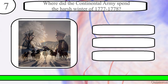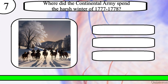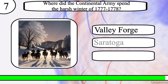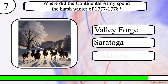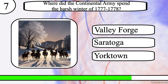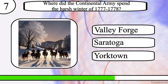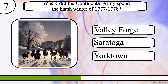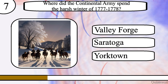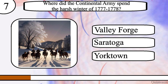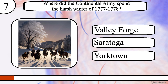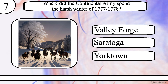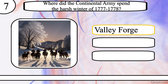Question 7. Where did the Continental Army spend the harsh winter of 1777-1778? Valley Forge, Saratoga, or Yorktown? The correct answer is Valley Forge.